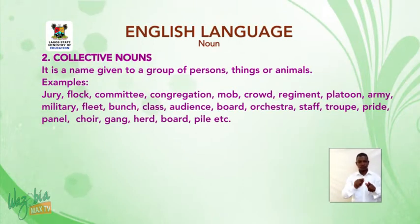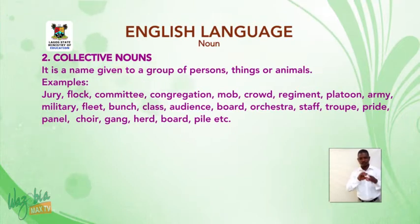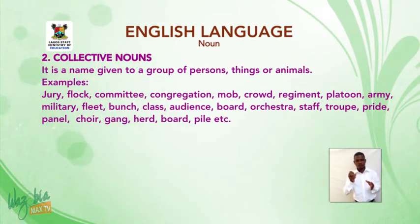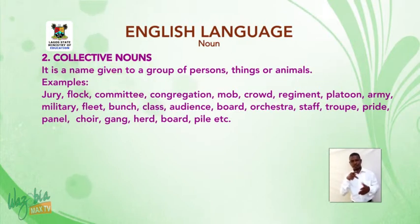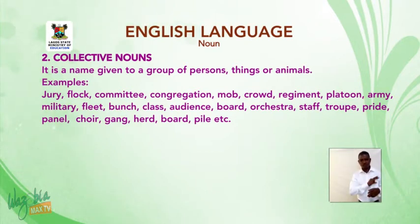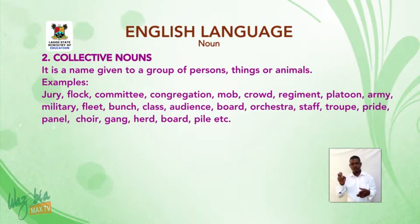A collective noun is a name given to a group of persons, things, or animals. Examples: jury, flock, committee, congregation, mob, crowd, regiment, platoon, army, military, fleet, bunch, class, audience, board, orchestra, staff, troop, pride, panel, choir, gang, herd, pie, etc.